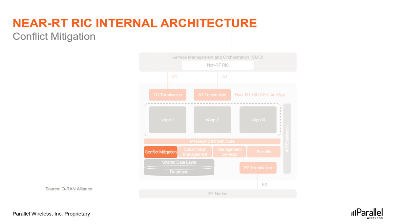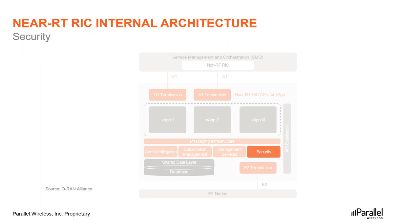Conflict mitigation resolves potentially overlapping or conflicting requests from multiple X-Apps. This can be very tricky, as each application will typically change one or more parameters with the objective of optimizing a specific metric, so conflict mitigation has to step in and resolve any conflicting actions. Security provides the security scheme for X-Apps, with one of its main objectives being to prevent malicious X-Apps from abusing radio network information or control capabilities over RAN functions.